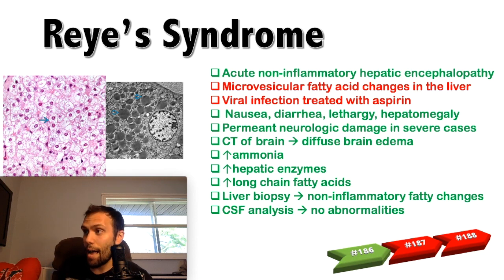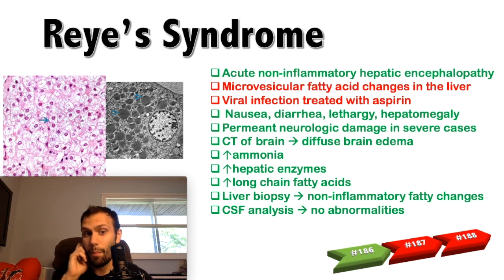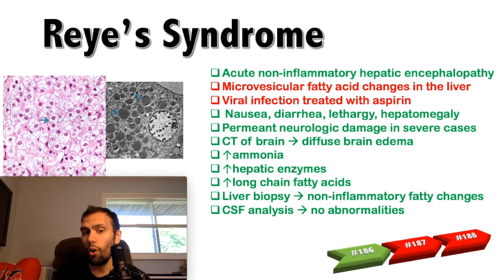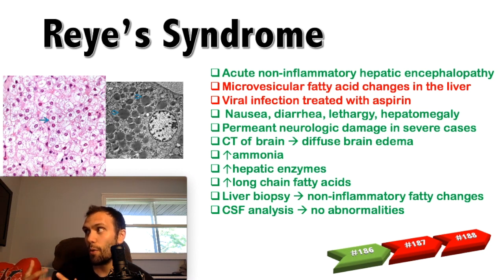Common symptoms of Reye syndrome include nausea, diarrhea, and lethargy — somewhat nonspecific — then hepatomegaly as the condition worsens, and eventually permanent neurologic damage in severe cases. On CT of the brain in severe cases, you can see diffuse brain edema. You can give agents like mannitol or dexamethasone to prevent swelling, but once diffuse brain edema occurs, prognosis declines. Hepatocyte dysfunction also leads to ammonia buildup from disruption of the urea cycle, contributing to hepatic encephalopathy.